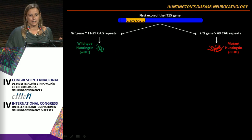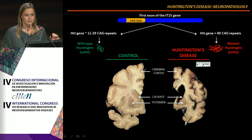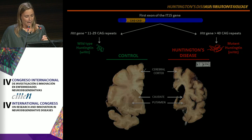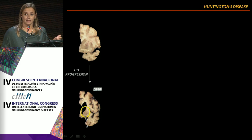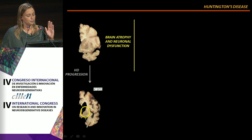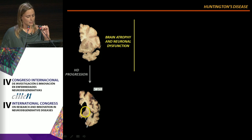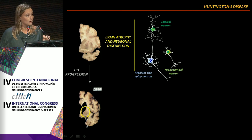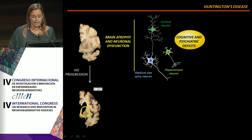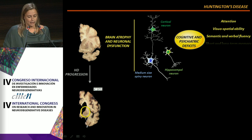Although neuropathologically HD is characterized by massive cell death in the caudate and putamen nucleus, and also cell death in the cerebral cortex, this cell death doesn't occur until advanced and later stages of the disease. Brain atrophy and neuronal dysfunction are the primary events in HD patients, particularly in the corticostriatal pathway and hippocampal circuitry, which are responsible for cognitive and psychiatric deficits.